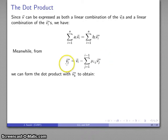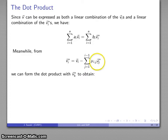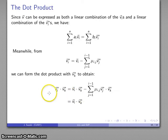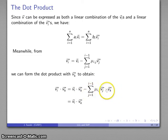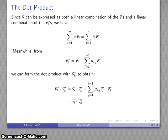Remember that the Gram-Schmidt reduction process gives v_i* as the i-th lattice basis vector minus the sum of dot products with the preceding Gram-Schmidt basis vectors. So if I dot v_i* with v_k*, all of those subtracted terms drop out due to orthogonality, meaning the dot product v_i* · v_k* is the same as v_i · v_k*. The dot product of two Gram-Schmidt basis vectors equals the dot product of the Gram-Schmidt basis vector with the corresponding lattice basis vector.